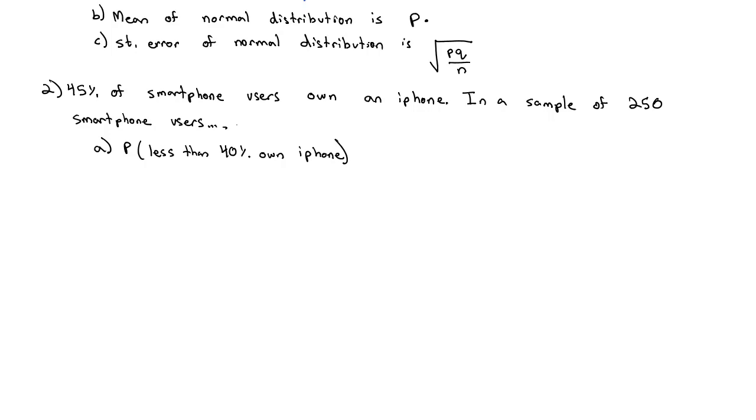Let's first identify what we've been given in this example. We've been told 45% of smartphone users own an iPhone. That is the probability of success, so P equals 0.45. From this, we can see Q must be 0.55 because they have to add up to one. We're also told the sample is 250 people, so that's our N, our sample size.